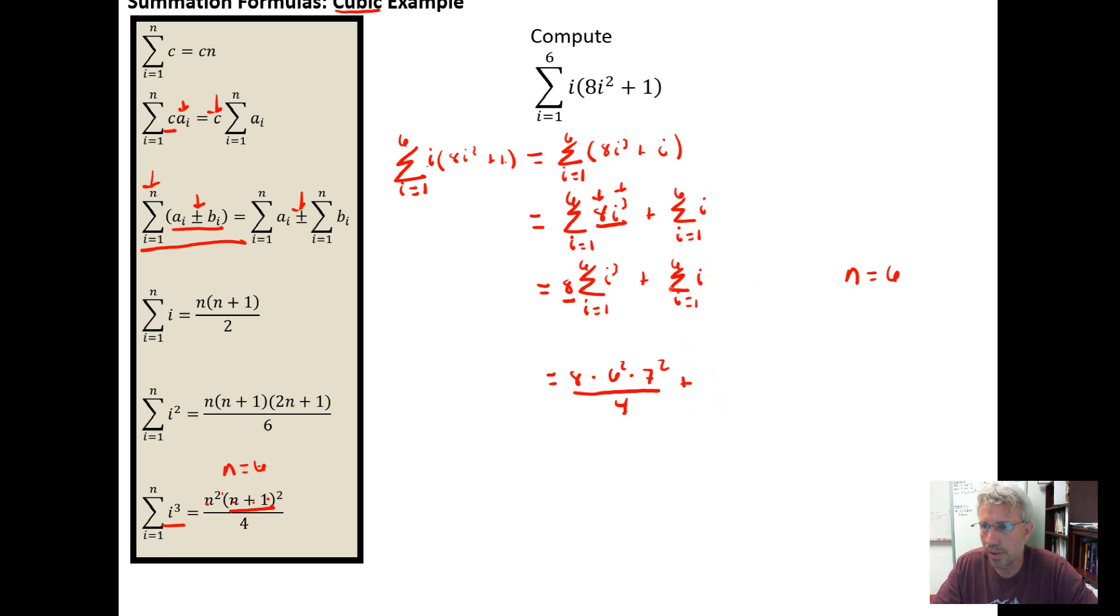I have a formula for the sum of i. The sum of i when n equals 6 is going to be 6 times (6 + 1 is 7), and it's going to be all over 2.